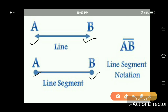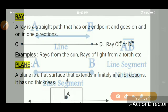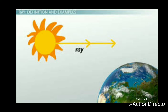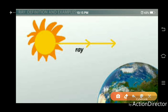Line segment notation is written as AB with a bar. A ray is a straight path that has one endpoint and goes on and on in one direction. The following figure shows ray CD — this arrow denotes a ray. Examples of rays include rays from the sun and rays of light from a torch. Another example is the sunlight coming from the sun.